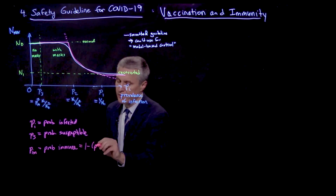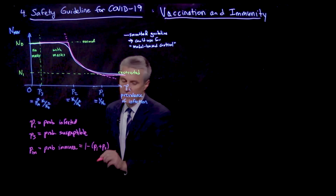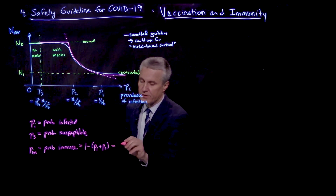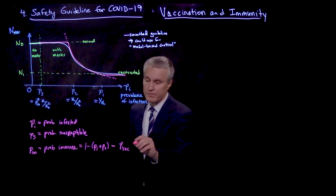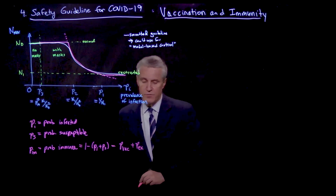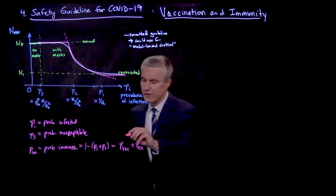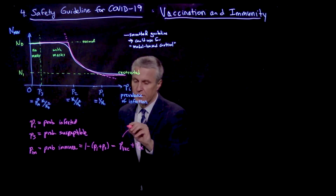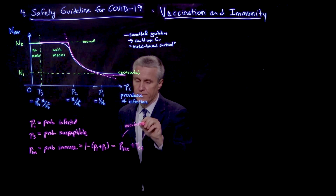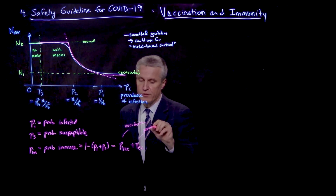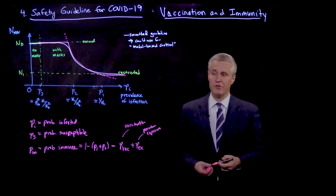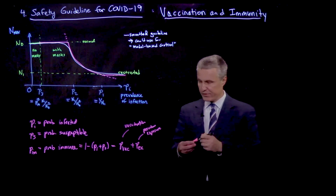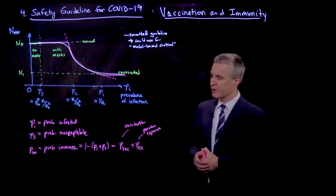We can further decompose PM as PVAC — the probability that a person has been successfully vaccinated and acquired immunity — plus PX, the probability of previous exposure that has led to immunity. Vaccination and previous exposure are the two routes to immunity. Whether prior exposure reliably confers immunity is still a topic under research and may depend on the specific population, but let's assume we have estimates of these numbers.